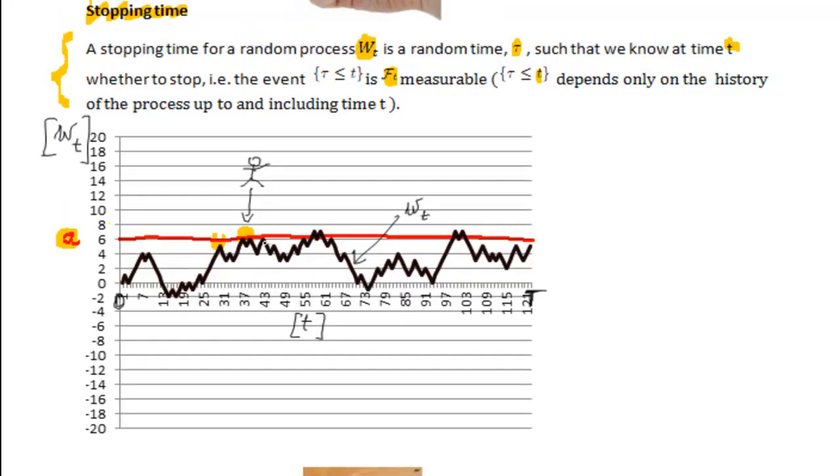Indeed, because we can clearly decide that we need to stop because we can observe the value of the process and we know that it's 6. So we stop here, yeah?